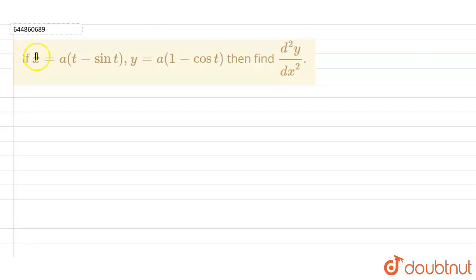Our question is: if x equals a times t minus sin t, and y equals a times 1 minus cos t, then find d²y/dx².